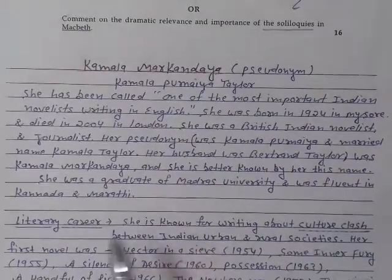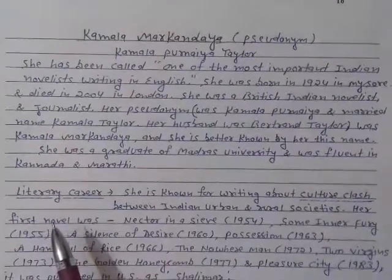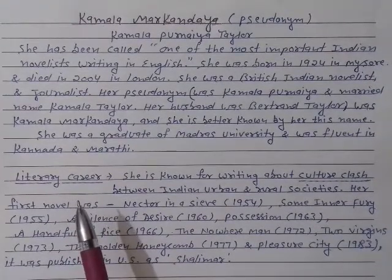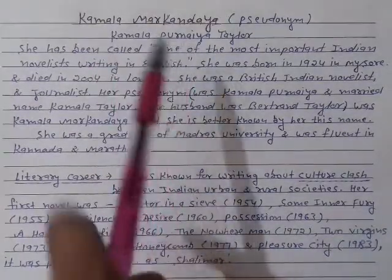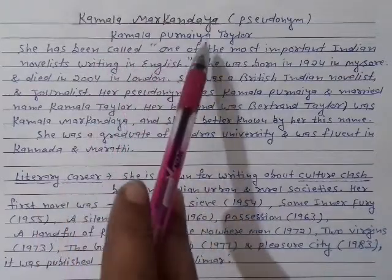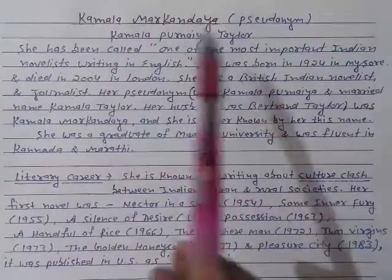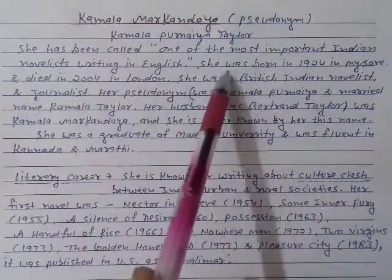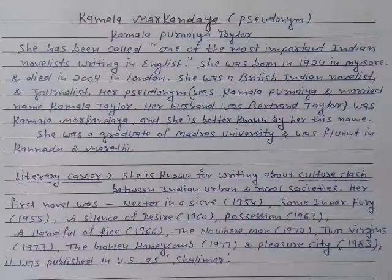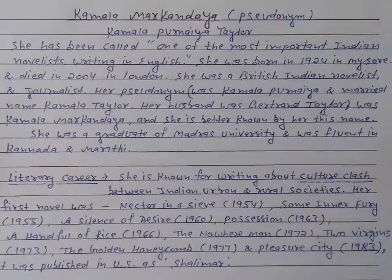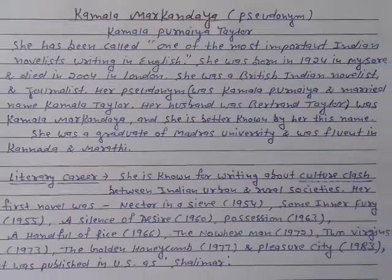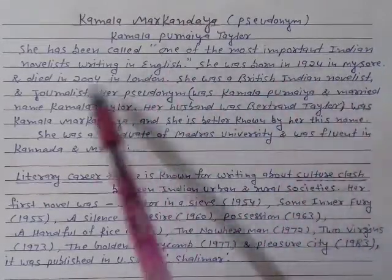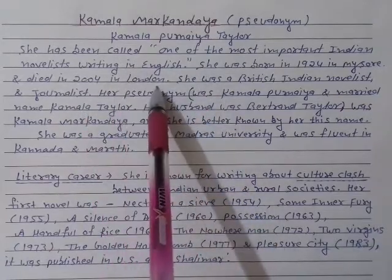Today we shall discuss about Kamala Markandaya. Kamala Markandaya is actually the pseudonym of Kamala Purnia. The complete name of Kamala Markandaya was Kamala Purnia Taylor. She has been called one of the most important Indian novelists writing in English. She was born in 1924 in Masur and she died in 2004, not in India, but in London.